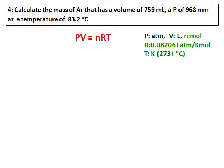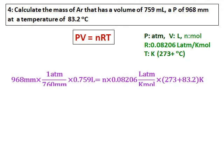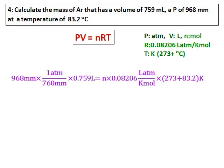Calculate the mass of argon that has a volume of 759 milliliter, pressure is 968 millimetre and the temperature is 83.2 degree Celsius. The formula is PV equals nRT, but as you know I want the pressure in atmosphere, therefore convert millimetre to atmosphere. Then I want the volume in litres, so convert 759 milliliter to litres, the rest of the values you have. The only other thing is convert temperature to kelvin.